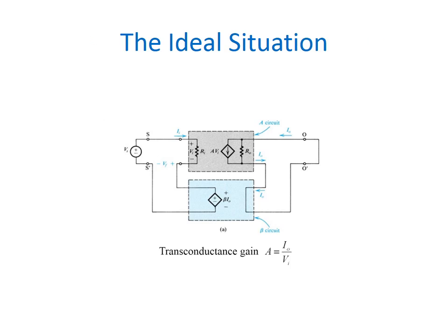First, we see the ideal value for the circuit. This feedback amplifier otherwise called as transconductance amplifier. That is why we are going to calculate the transconductance gain from the circuit. That is A equal to I0 by VI.